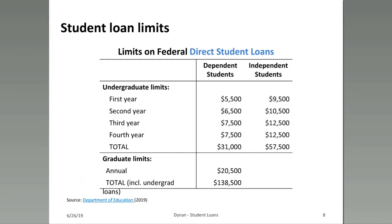Student loan limits for the most basic type of direct loans are between $5,000 and $8,000 per year for dependent undergrads and somewhat higher for independent undergrads. For graduate education, there's an annual limit of just over $20,000 and a total cap of around $140,000 on these types of student loans.